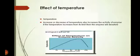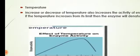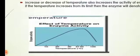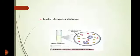Next, the effect of temperature: an increase or decrease in temperature also affects enzyme activity. If temperature increases beyond its limit, then the enzyme will denature. As you can see in the graph, if we increase the temperature then the activity of the enzyme will also increase up to a point.